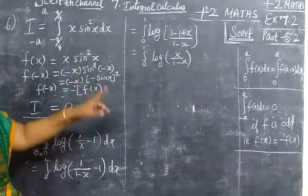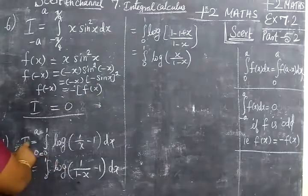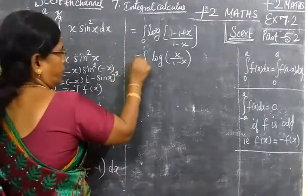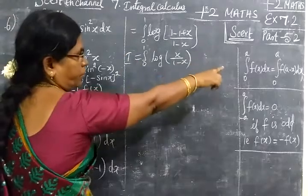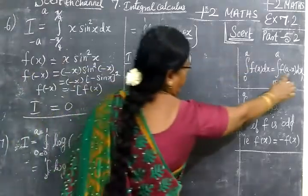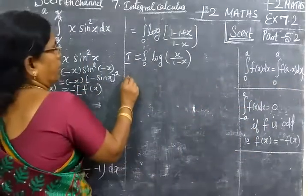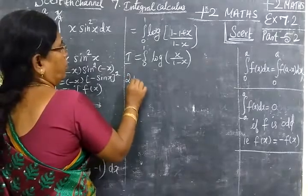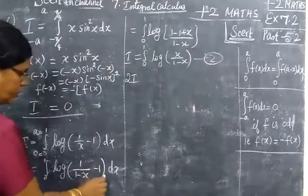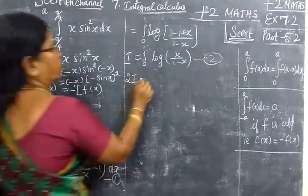1, 1 cancels. So this is also i. So by property of definite integral, both are equal. That means both are i. Now adding 1 and 2, you are getting 2i. This we take as 1.